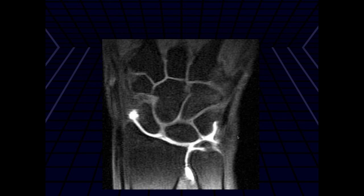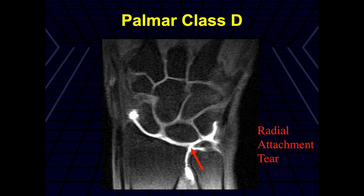This is a wrist arthrogram, and we can see there's what appears to be a central tear of the proximal TFC disc, with contrast signal intensity extending into the DRUJ. This is actually a radial side tear rather than a central tear — it's at the radial insertion to the articular cartilage. So this would be a Palmer class D type tear.